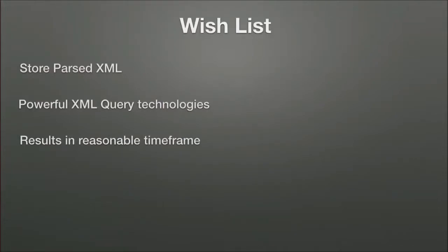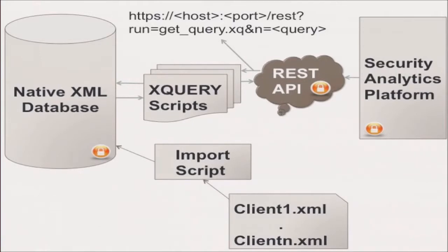The native XML database fits all three of those requirements beautifully. This is our current mature prototype solving most of our use cases. We collect all metadata from our clients into a single folder. An import script — mainly a wrapper against the native XML API with a little business logic — dumps all these XML files into the database. XQuery scripts are central to everything, working beautifully for millions of records. We talk to XQuery through a REST API and our security analytics platform, which is currently a single-page Python Flask application wrapping those REST API calls.